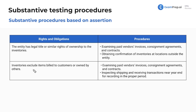Next up: inventories exclude items billed to customers or owned by others — you want to make sure inventory is owned solely by that company. If you've built something for a customer and are just holding it for them, you should not include that in inventory. Maybe the customer can't accept it yet because they're moving their factory — then you should not count that as inventory. You're going to examine paid invoices, consignment agreements, and contracts, and inspect shipping and receiving transactions near year-end for recording in the proper period.